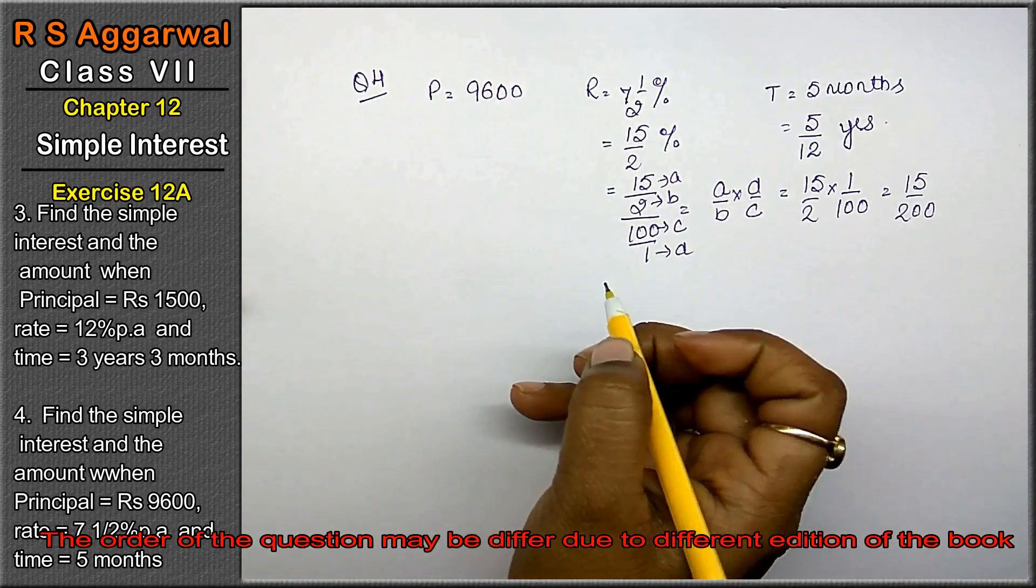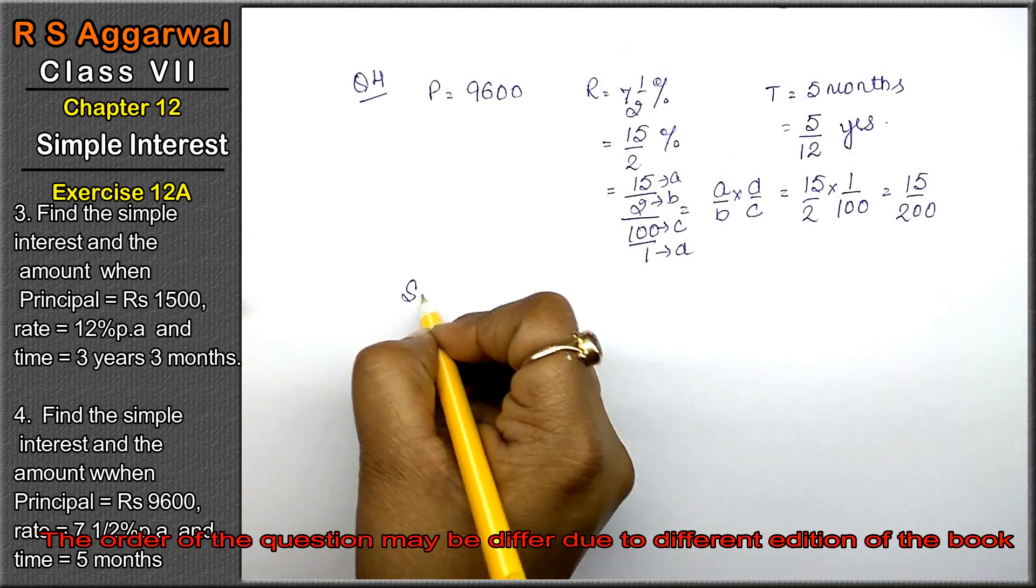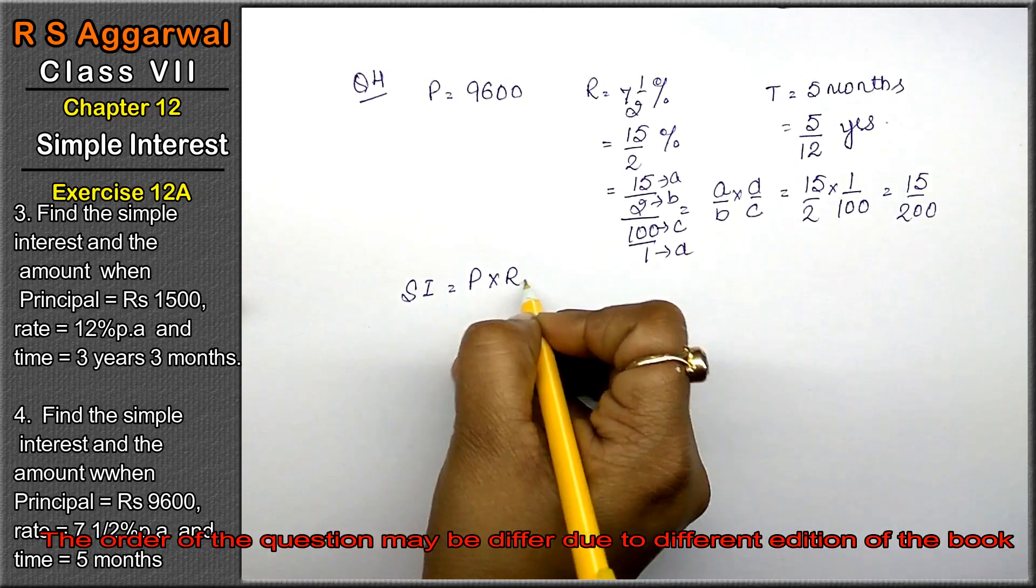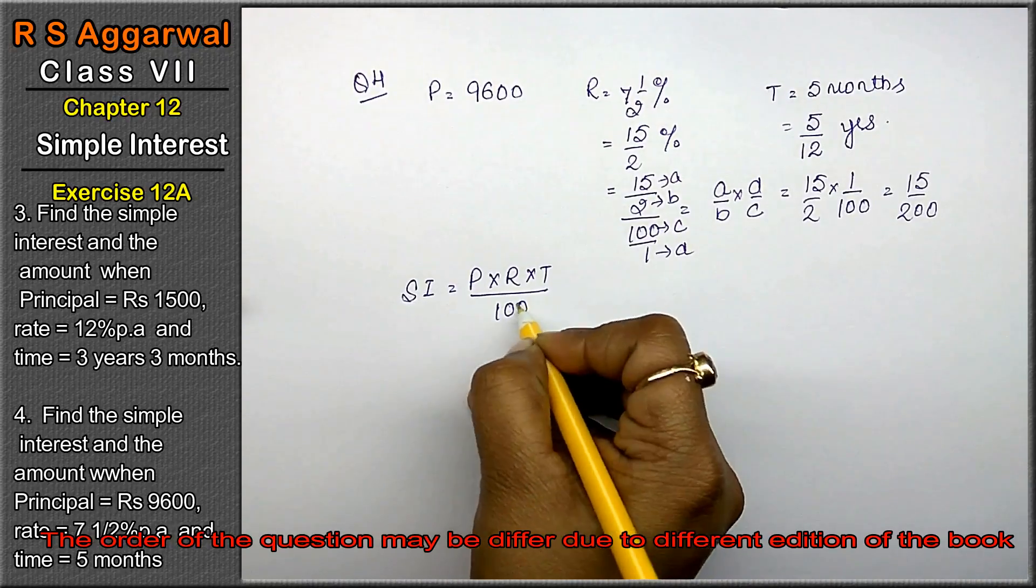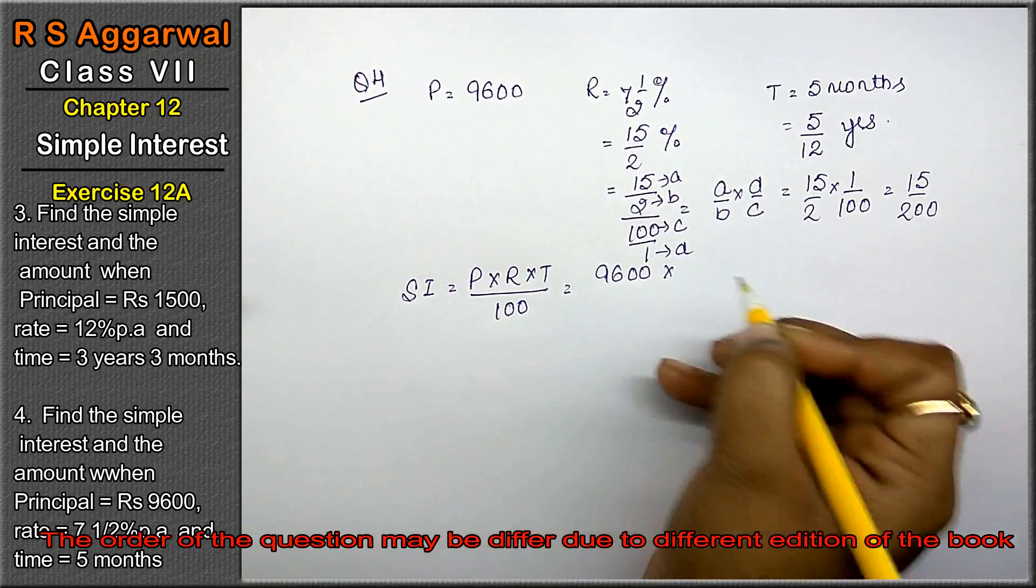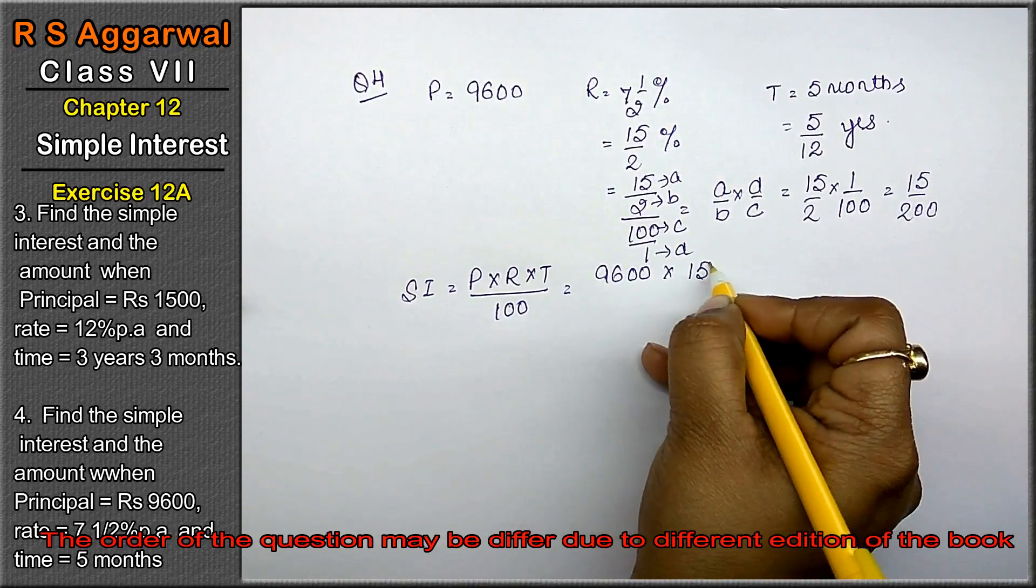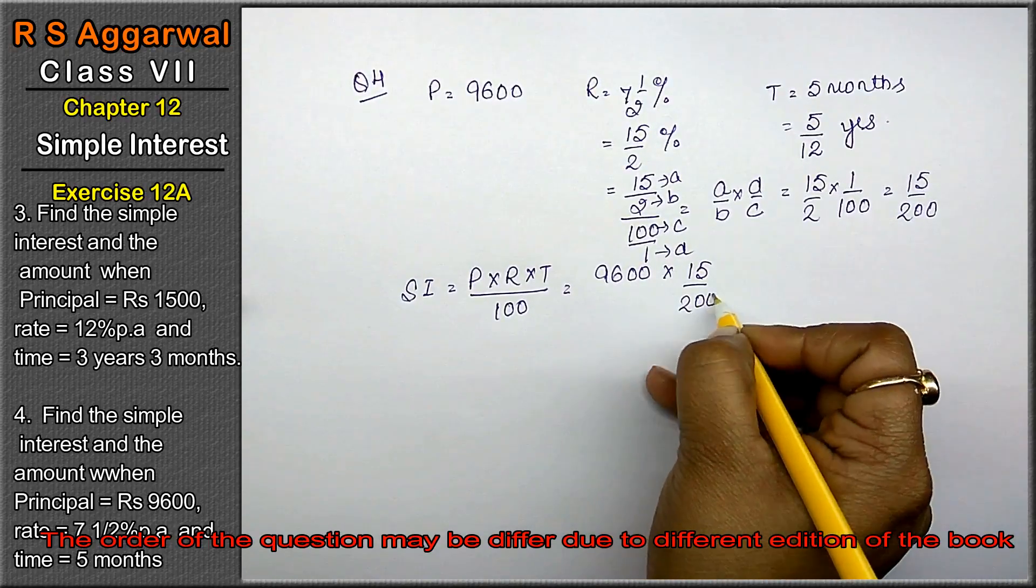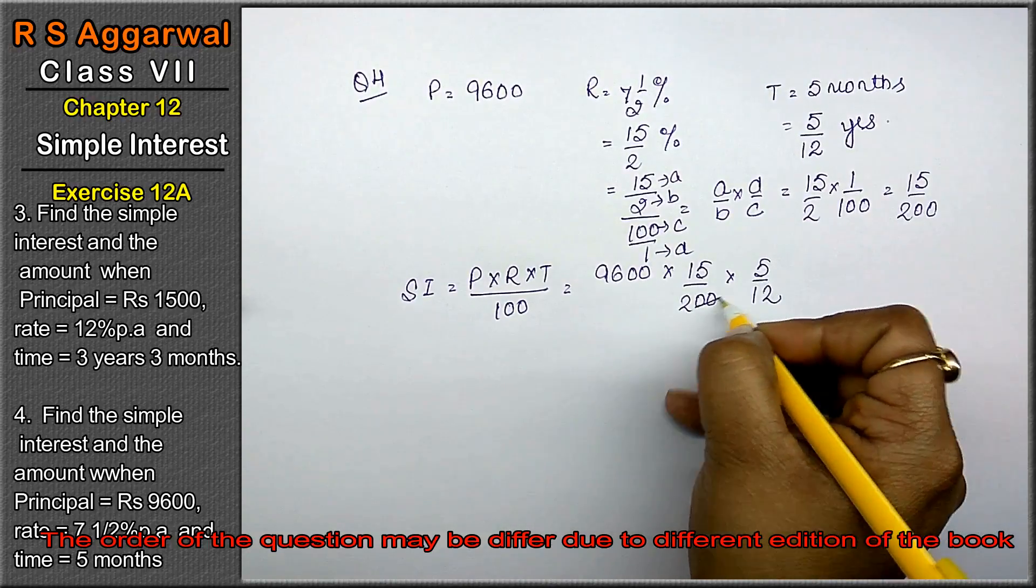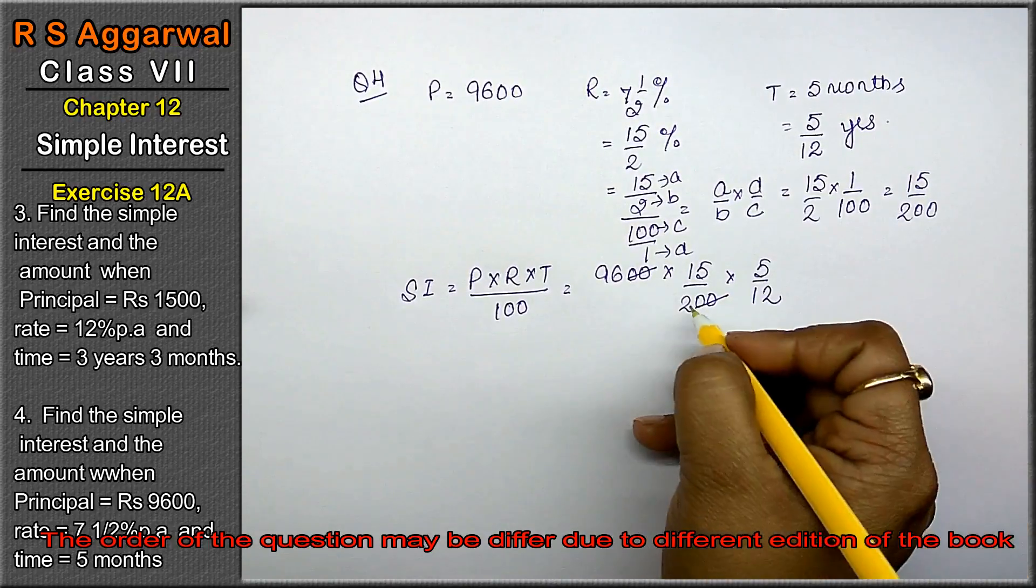Now simple interest formula: P into R into T upon 100. P is 9600, R is 15 upon 200, and T is 5 upon 12.